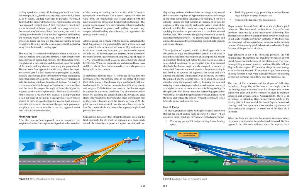The lift/drag factors are varied by the pilot to adjust the descent through the use of landing flaps. Flap extension during landings provides several advantages: producing greater lift and permitting lower landing speed; producing greater drag, permitting a steeper descent angle without airspeed increase; and reducing the length of the landing roll. Flap extension has a definite effect on the airplane's pitch behavior. The increased camber from flap deflection produces lift primarily on the rear portion of the wing, producing a nose-down pitching moment.